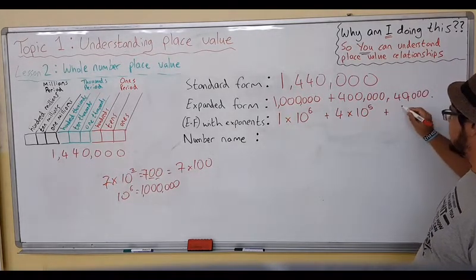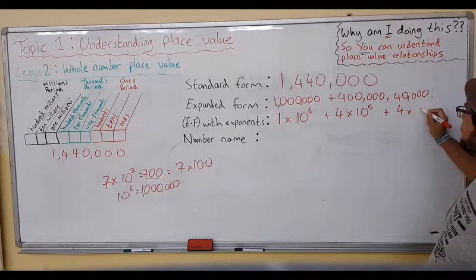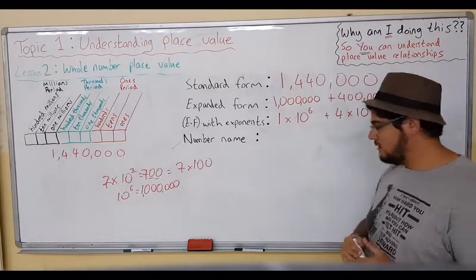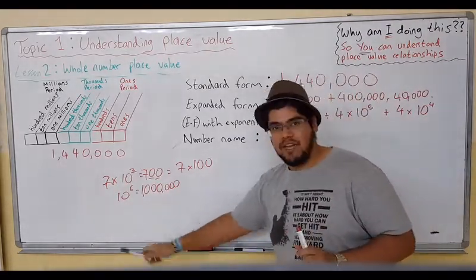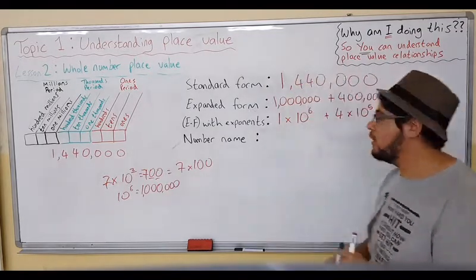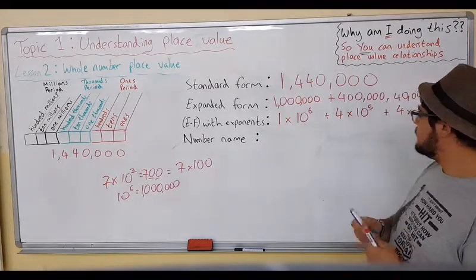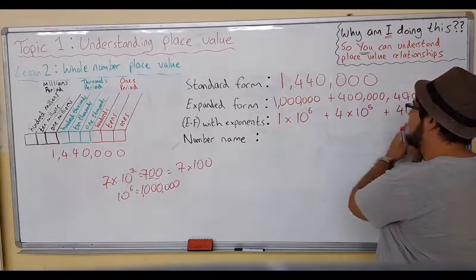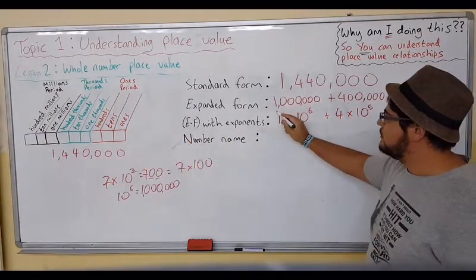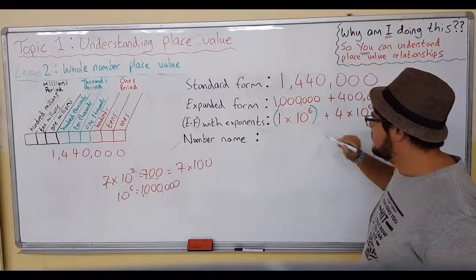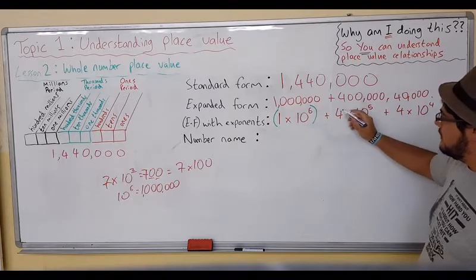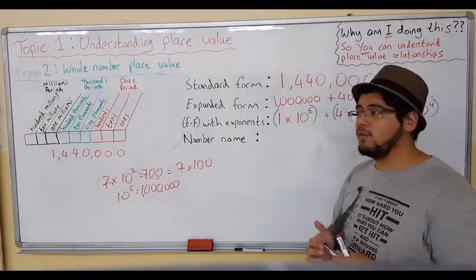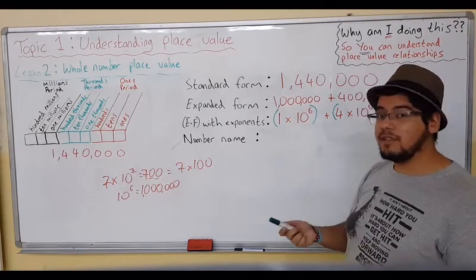There's one more thing we need to add, and that is parentheses. Parentheses separate certain parts of the expression and are very useful and easy to read. We have multiplications and additions in here, and we need to show which parts belong together — just like periods in the chart. So we use parentheses or brackets around each term: (1 × 10^6) + (4 × 10^5) + (4 × 10^4). Both words mean the same thing.